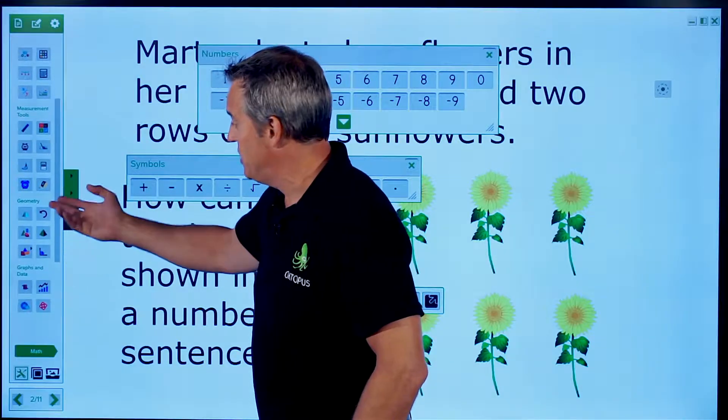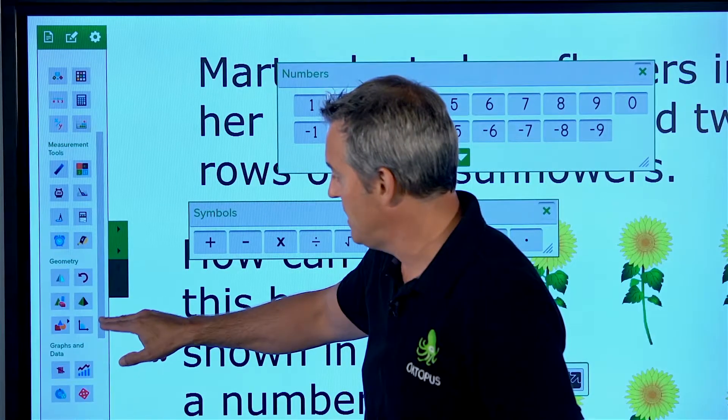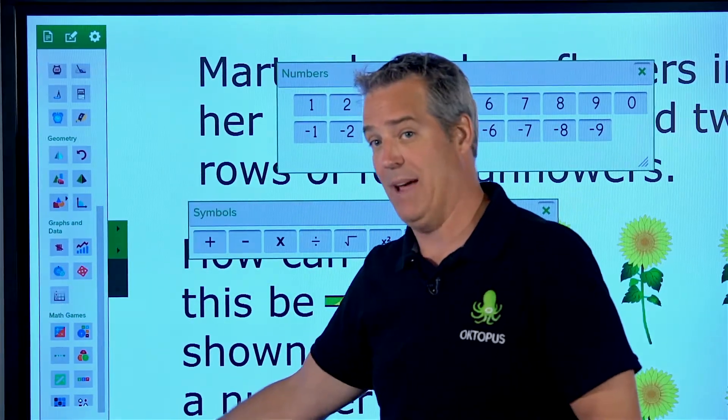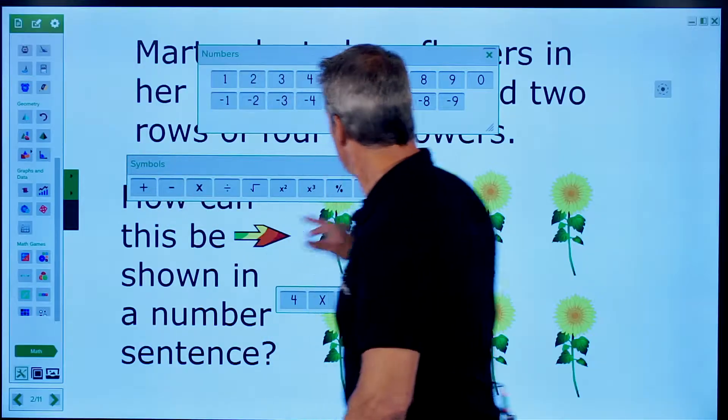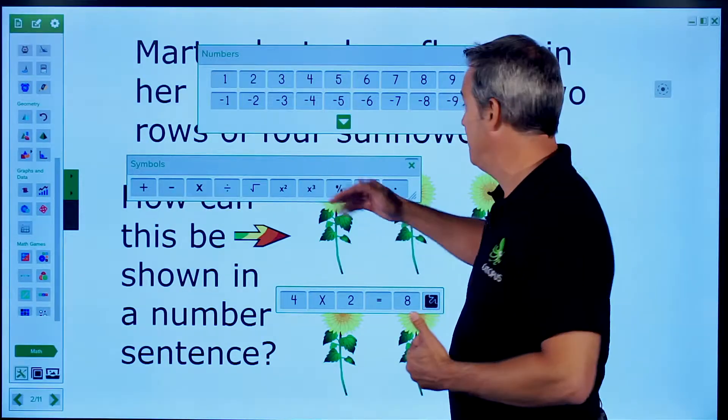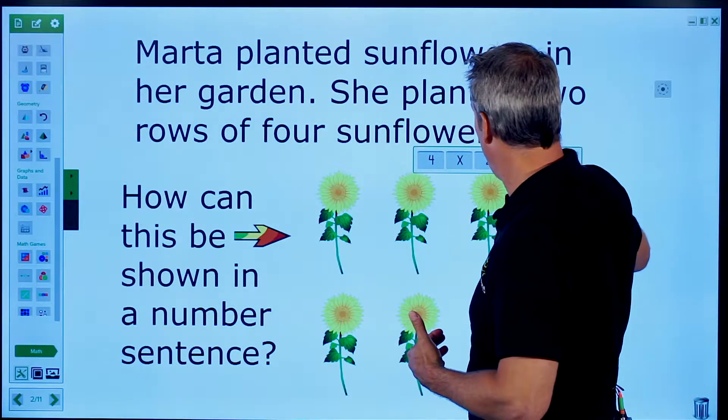If we're teaching about shapes, we have shapes, different objects like that that we can draw out. So lots of geometry tools. And there's math games as well. So we can bring out any of our math games. So that's just sort of the basics. A lot of different tools that you can draw from. It's just going to be depending on the specific activity that you're working with.